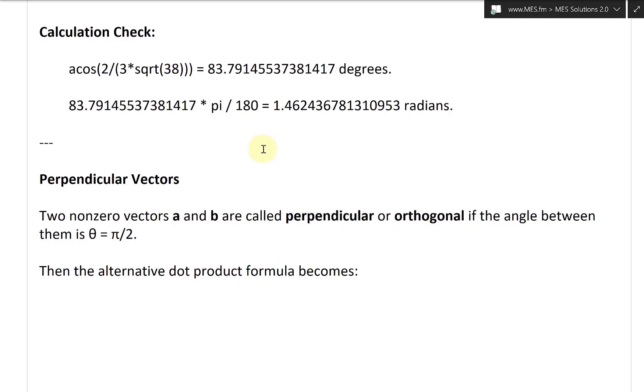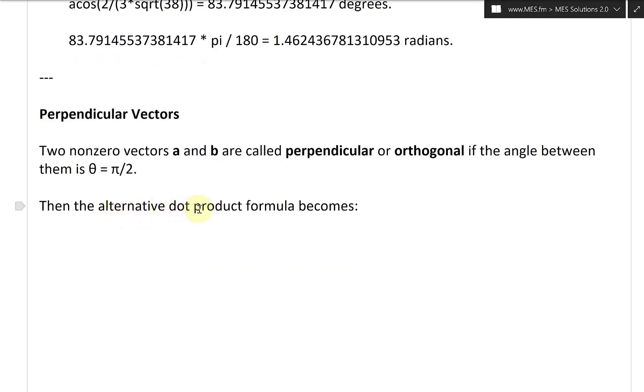Then the alternative dot product formula becomes, or definition two, this just becomes a dot b. For the angle theta equal to pi over two, this equals, this becomes, and then the cosine.